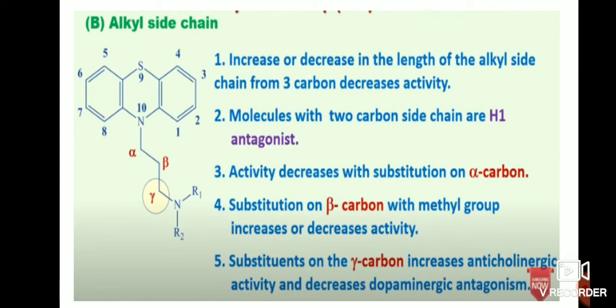Substitution on the beta carbon with a methyl group may increase or decrease the activity. Substitution on the gamma carbon increases anticholinergic activity and decreases dopaminergic antagonism. So at the gamma position, if a substituent is present, it may increase anticholinergic activity and decrease dopaminergic antagonism.